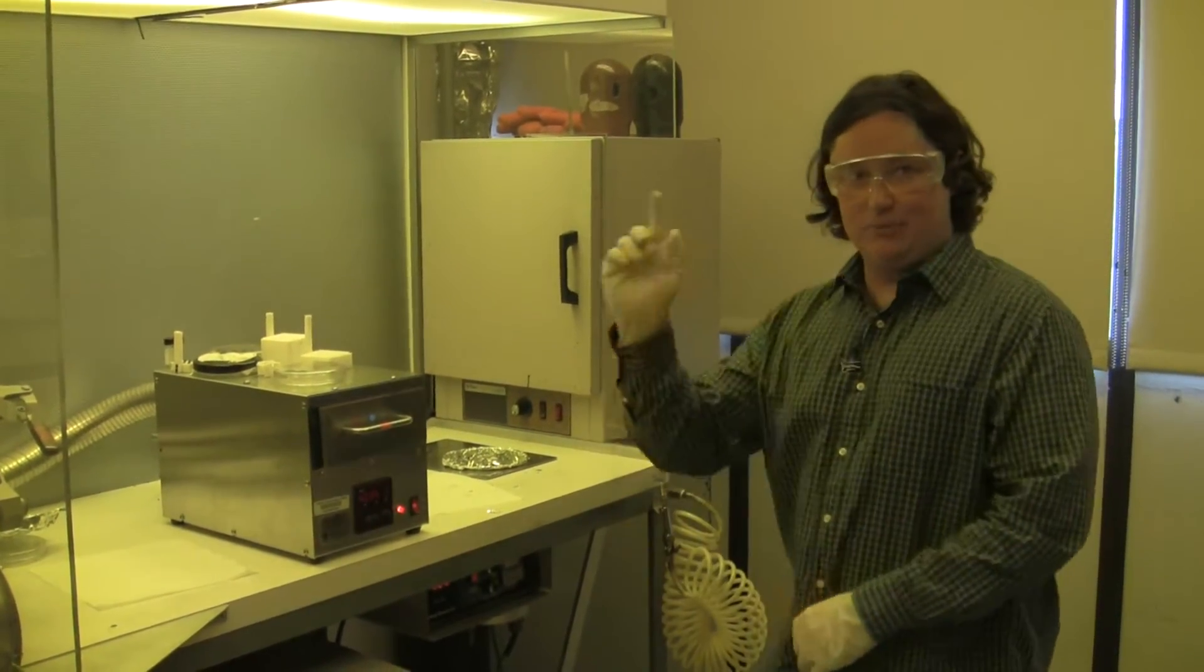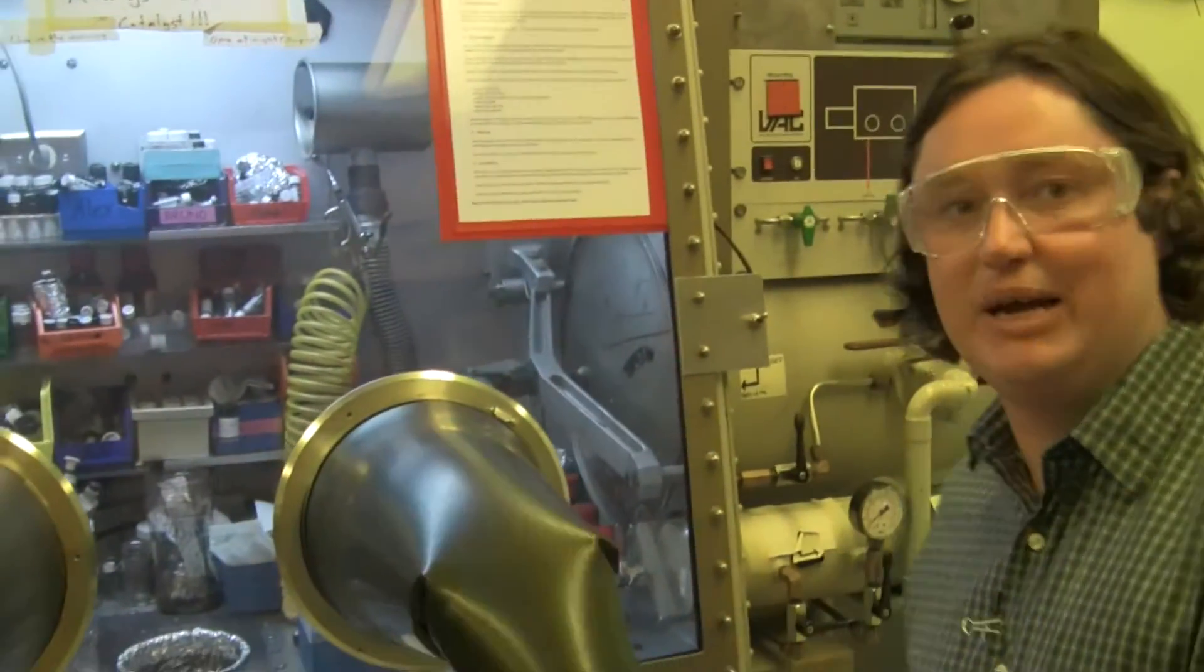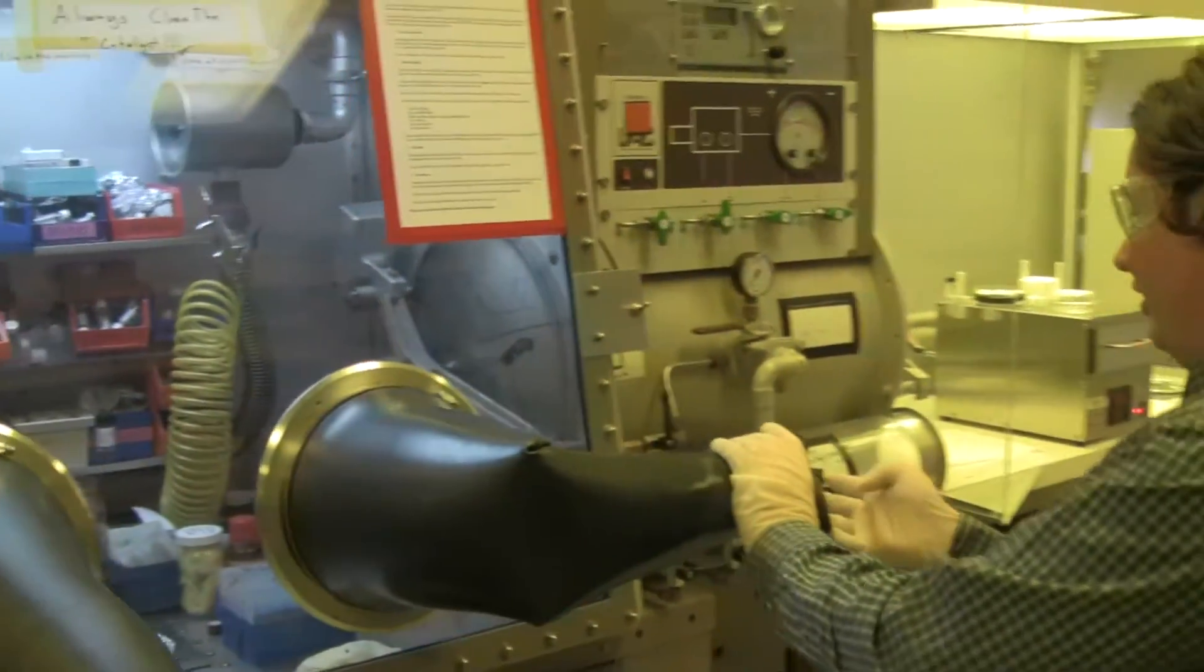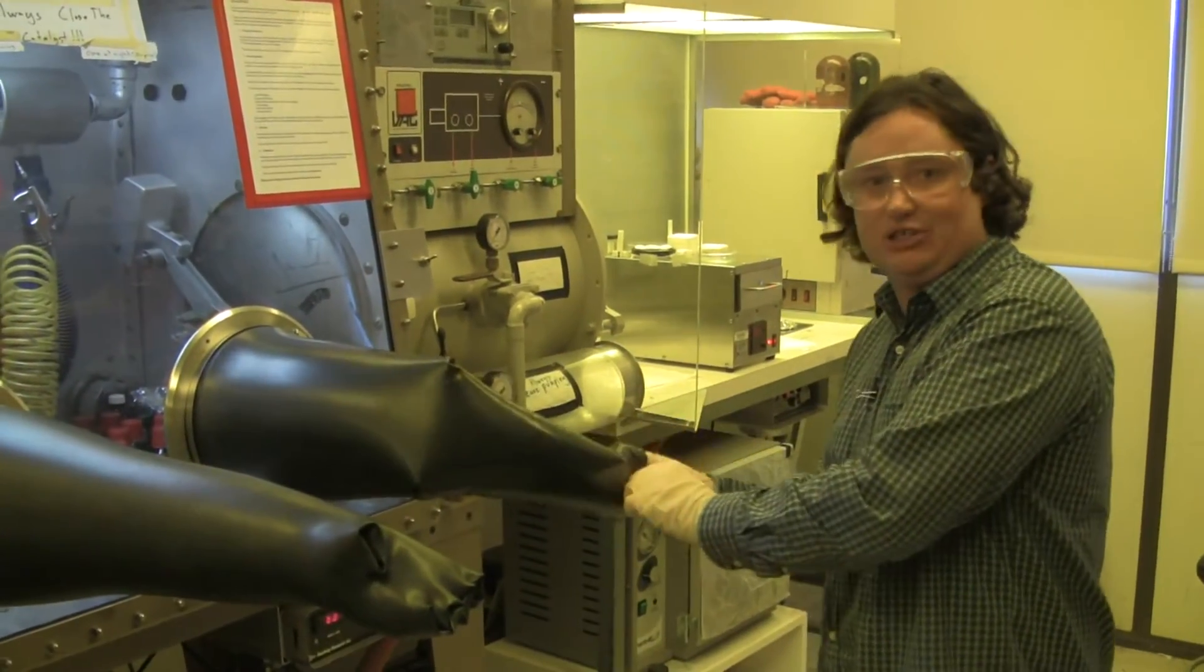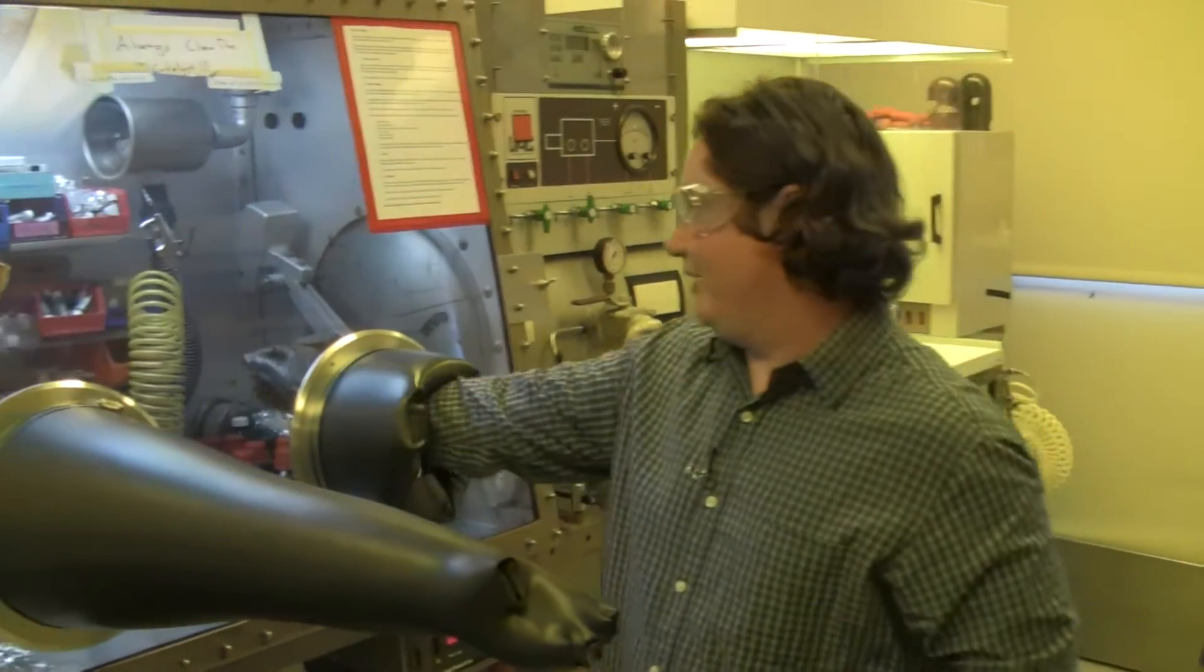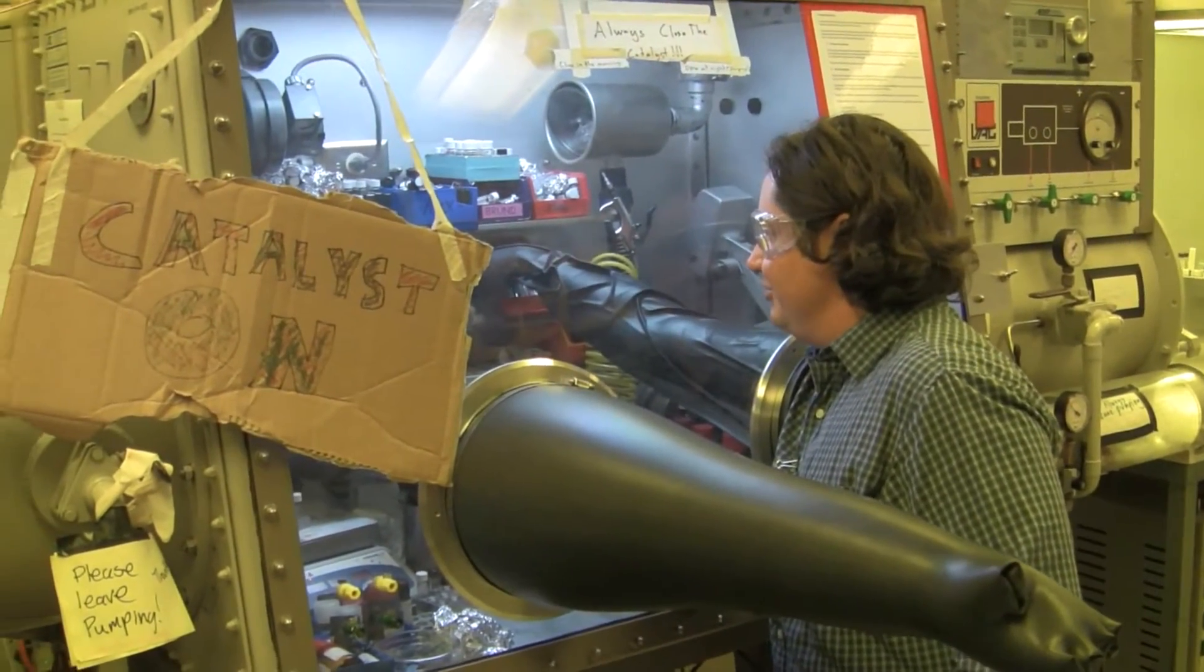After the P-dot has been applied, we bring them into a glove box to apply the organic semiconductor layer. The organic semiconductor layers have different properties depending on what material is used. They are usually colored, so I have a couple of examples here.